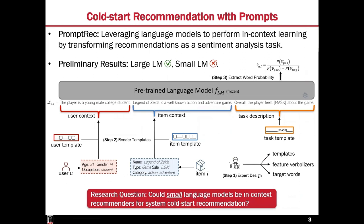PromptRec makes recommendations with in-context learning. Specifically, we design a prompt template for in-context learning. The template contains the features of users and items, as well as a sentiment slot. Given a user-item pair, we fill the prompt with the features of the user and item, and then we let the language model predict the sentiment based on the prompt. A high probability of predicting a positive sentiment means that the language model believes the user likes this item.